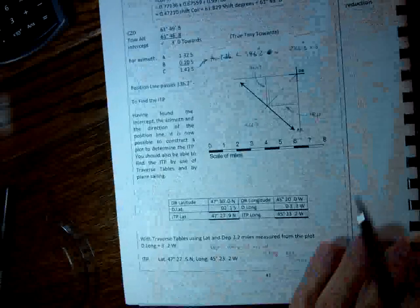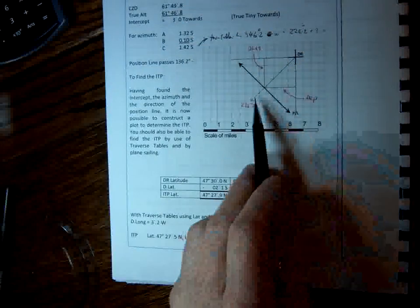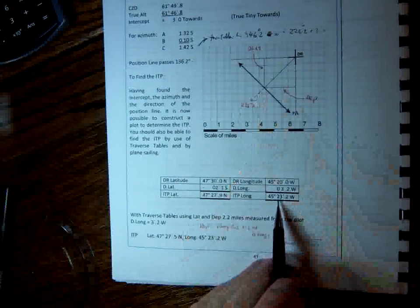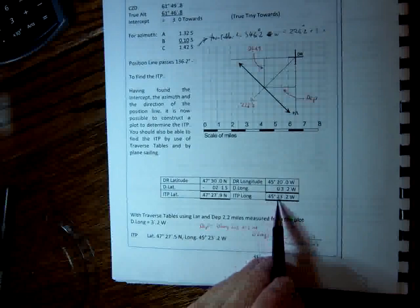So what you do then, again, you go to your DR of 3.2. It's in a westerly position, so it's southwest, it's a westerly position, therefore it's going to increase, and therefore it makes our longitude 45, 23.2.